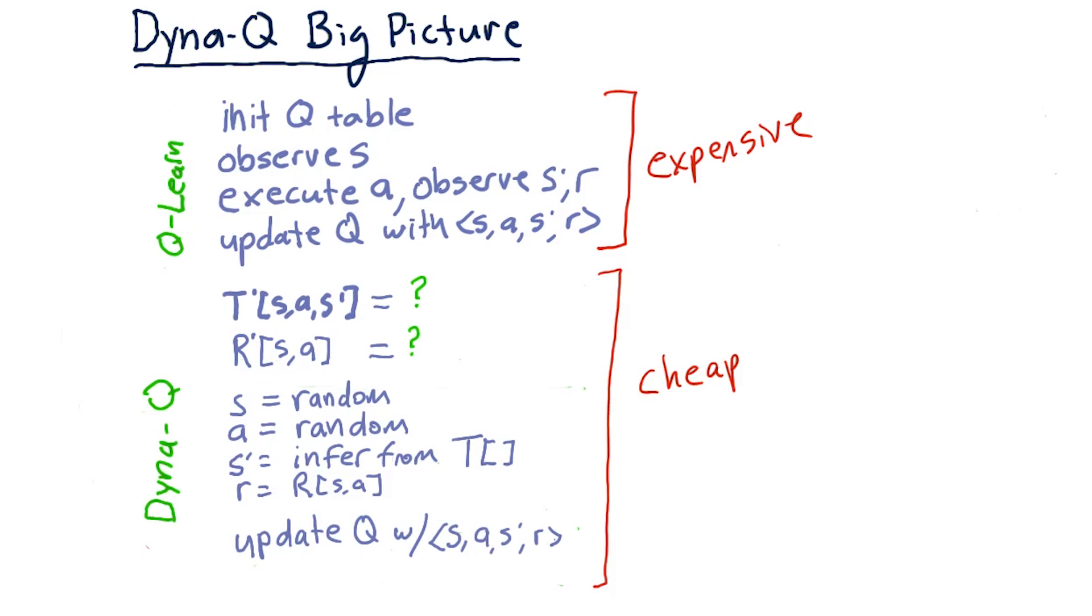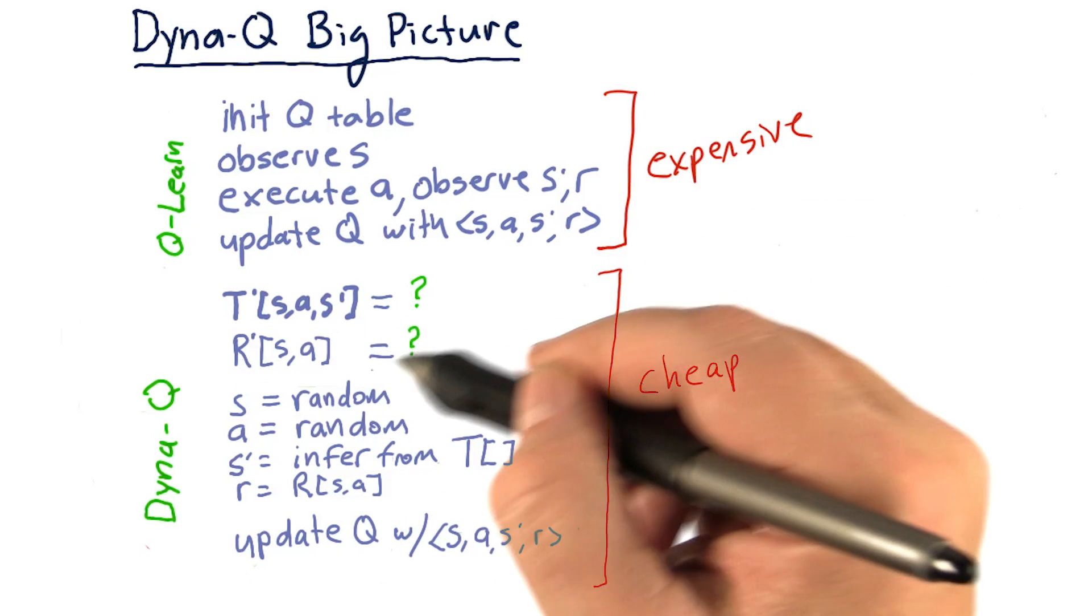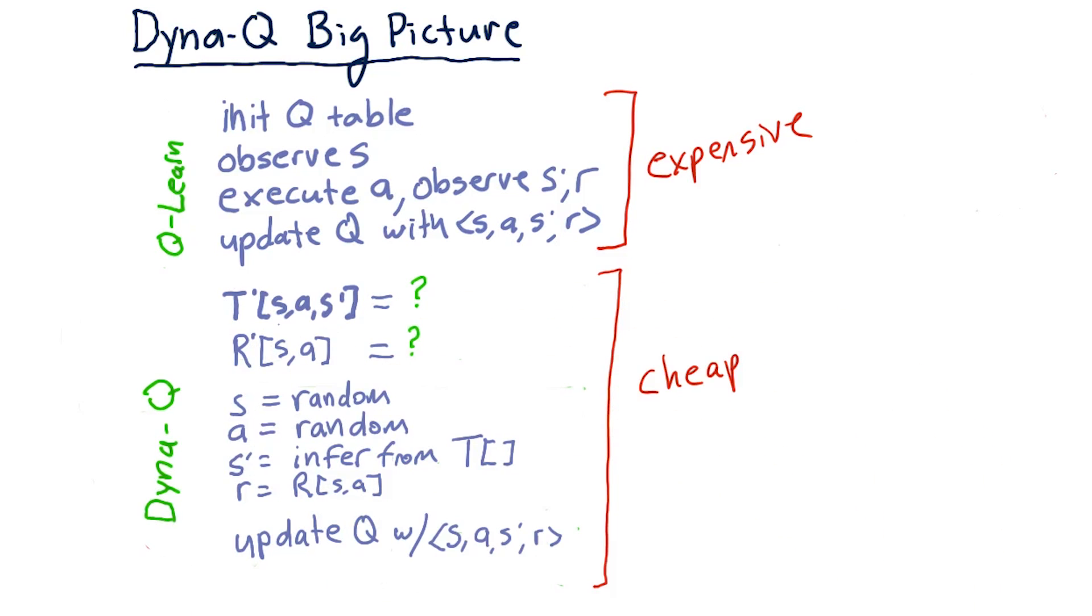So the Q table update is our final step. And this is really all there is to DynaQ. We've added these three sections. And what's missing, and I'll get to in just a moment, is how do we update our model of T and our model of R.